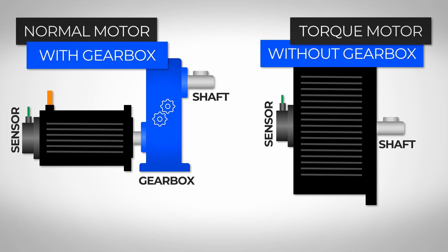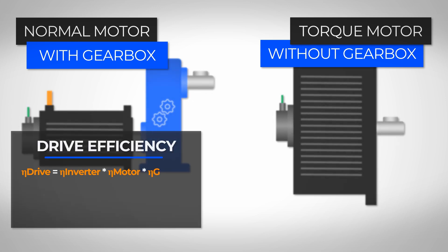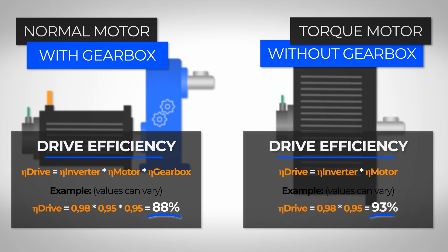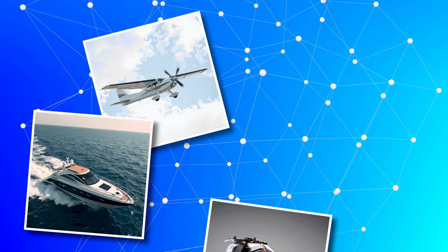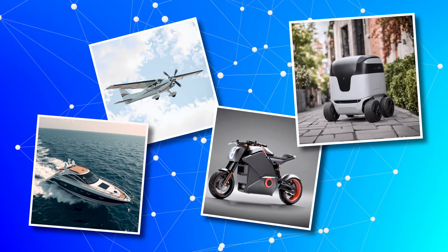Eliminating the gearbox removes its associated losses and increases the overall efficiency of the electric drive system, since it then consists only of the efficiency of the high torque motor and the inverter or power electronics. This is a great advantage for electric boats and electric airplanes.